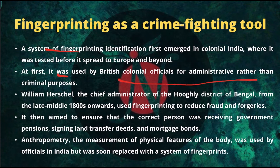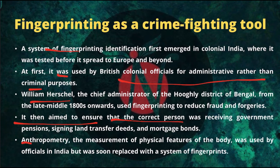It was used by British colonial officials for administrative rather than criminal purposes. William Herschel, the chief administrator of the Hooghly district of Bengal from the late mid-1800s onwards, used fingerprinting to reduce fraud and forgeries, to ensure that the correct person was receiving government pensions, signing land transfer deeds, and mortgage bonds. Anthropometry — the measurement of physical features of the body — was used by officials in India but was soon replaced by a system of fingerprints.